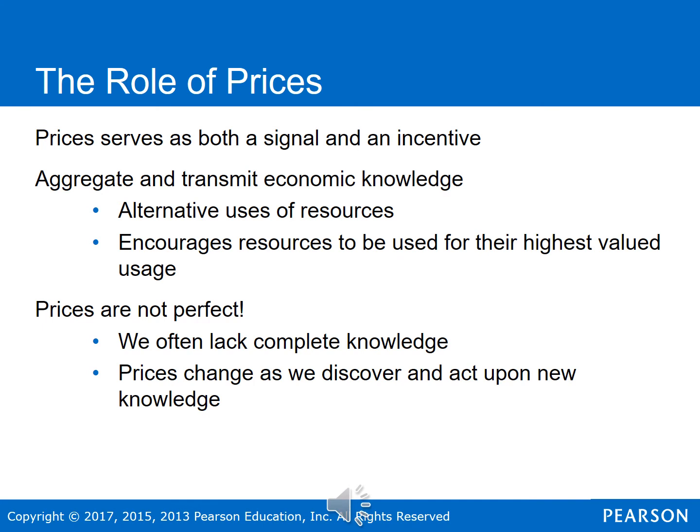Prices are not freely chosen or forced on consumers — firms cannot be successful over time by ignoring what consumers want. Every good or resource has alternate uses and can be used in the production of numerous goods. What prices do is show how much something is worth to all the different market participants. If a good is worth a lot to someone, they'll bid up the price, signaling to others that there are higher valued uses for those products, encouraging them to economize and save it for where those goods have the highest valued usage. This is the most efficient way we've come up with to conserve resources for those who value them the most.